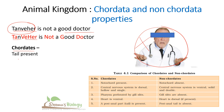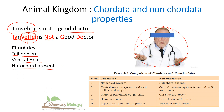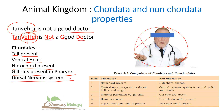Starting with chordata: TA in Tanvir stands for tail present; VE stands for ventral heart; NOT means notochord present; G means gill slits present in pharynx; and DO means dorsal nervous system is present. So the properties of chordates are: tail present, ventral heart, notochord present, gill slits present in the pharynx, and dorsal nervous system present.